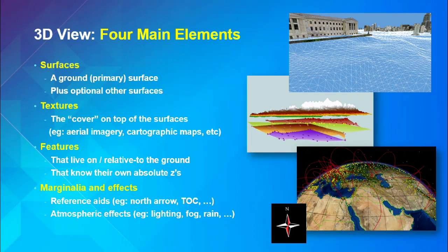A 3D view has four main elements. The first is surfaces — that mesh thing, like the ground, which is the most common primary surface. Most scenes have a primary surface where most content lives. But you can have other surfaces: low surface geometry, an ozone layer, or thematic surfaces like population, housing prices, or percentage chance of being attacked by a polar bear — all would work as elements within the scene.